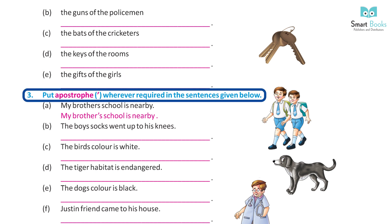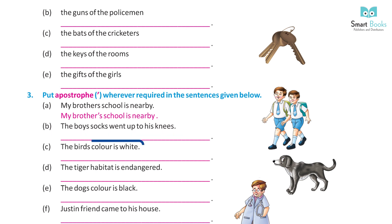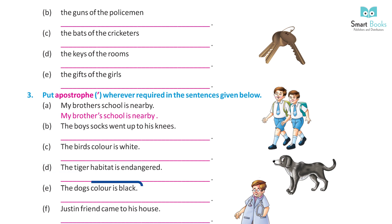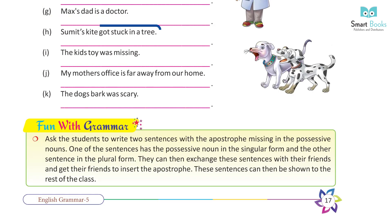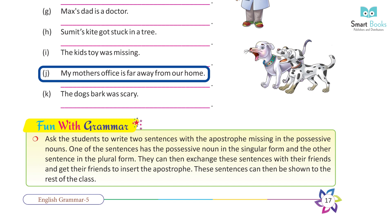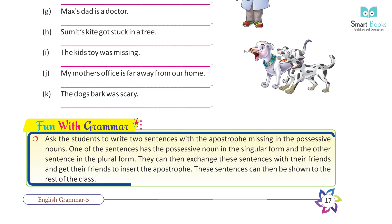Exercise 3 — put an apostrophe wherever required: a) My brother's school is nearby. b) The boy's socks went up to his knees. c) The bird's color is white. d) The tiger's head is endangered. e) The dog's color is black. f) Justin's friend came to his house. g) Meg's dad is a doctor. h) Squirrel's tail got stuck in a tree. i) The kid's toy was missing. j) My mother's office is far away from our home. k) The dog's bark was scary.